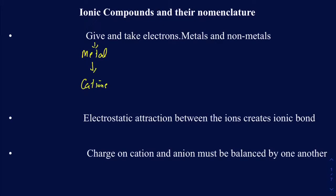On the other hand, the electrons that are lost by the metals will be taken up by the non-metals. So non-metals gain the electrons, and when they gain electrons, they make the anions, which carry the negative charge. And the cations are the ones bearing the positive charge.